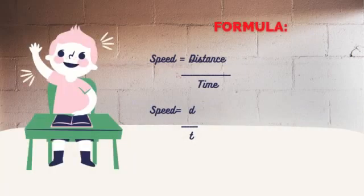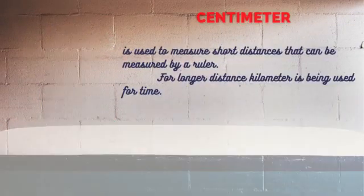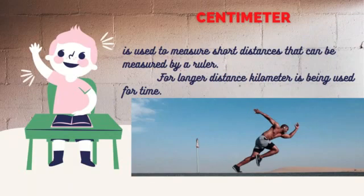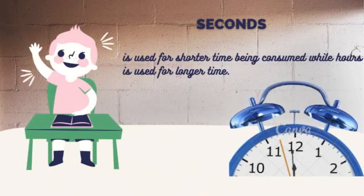This is the formula in computing speed: Speed equals distance over time (S = d/t). Centimeter is used to measure short distances that can be measured by a ruler. For longer distances, kilometers are used. For time, seconds are used for shorter durations, while hours are used for longer time.